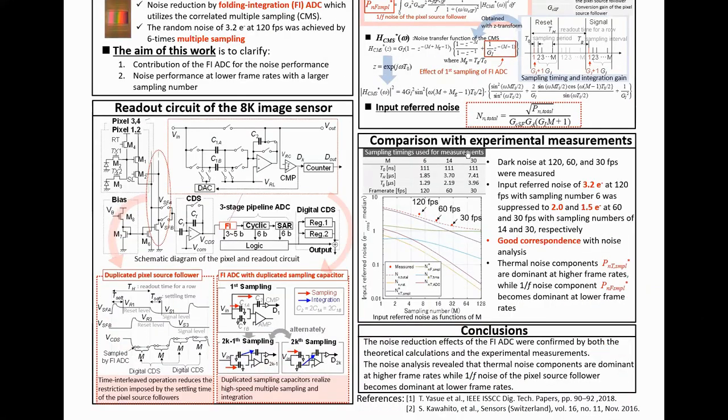In the experimental measurement, the random noise of 3.2 electron at 120 FPS with sampling number 6 was suppressed to 2.0 and 1.5 electron at 60 and 30 FPS with sampling numbers of 14 and 30 respectively. These results are comparable to the theoretical calculations. Furthermore, theoretical calculations revealed that the thermal noise component is dominant at the higher frame rate, while 1 over f noise from the source follower becomes dominant at the lower frame rates.